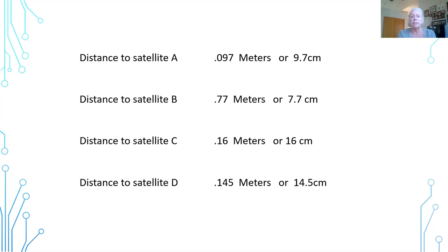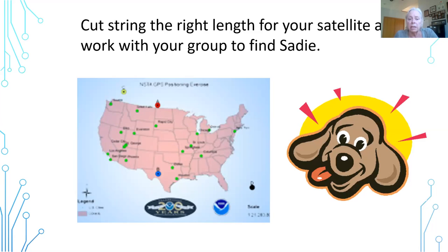I would have the students do this in small groups. Each person in the group would get a different satellite and measure out a piece of string. They would start their piece of string at satellite A, B, C, or D and find out where they intersect — making an arc on the map. When all the arcs are done, you will find that Sadie is actually in Springfield, Illinois. You can change those numbers any way you like to have Sadie be found in other places. It's pretty straightforward mathematics — learning about map scales and about the signals that come from GPS satellites — and that we can find someone or something, in this case Sadie, using those GPS coordinates.